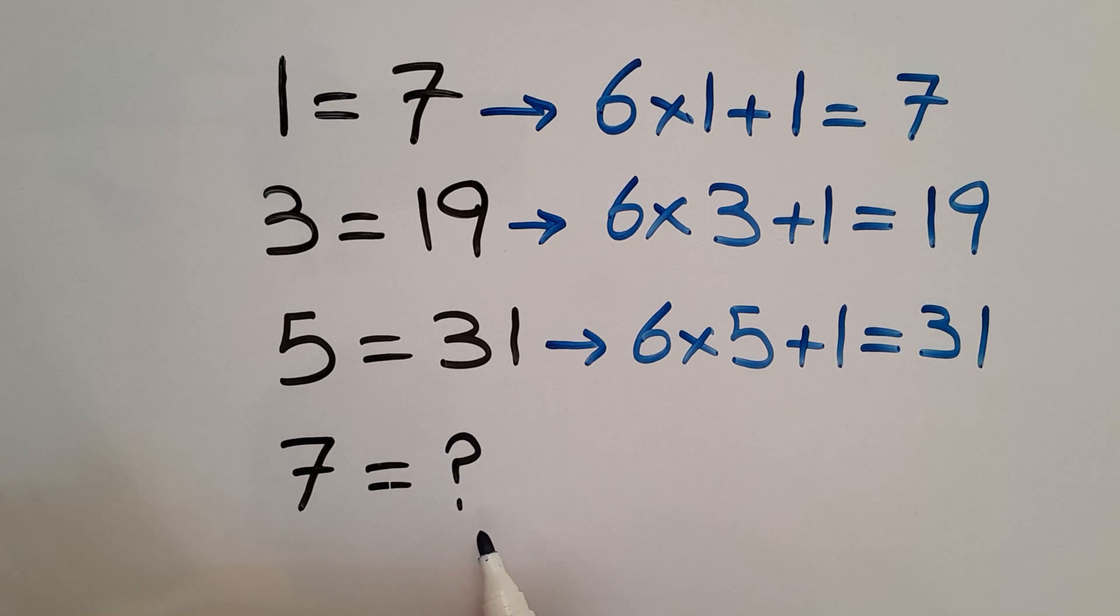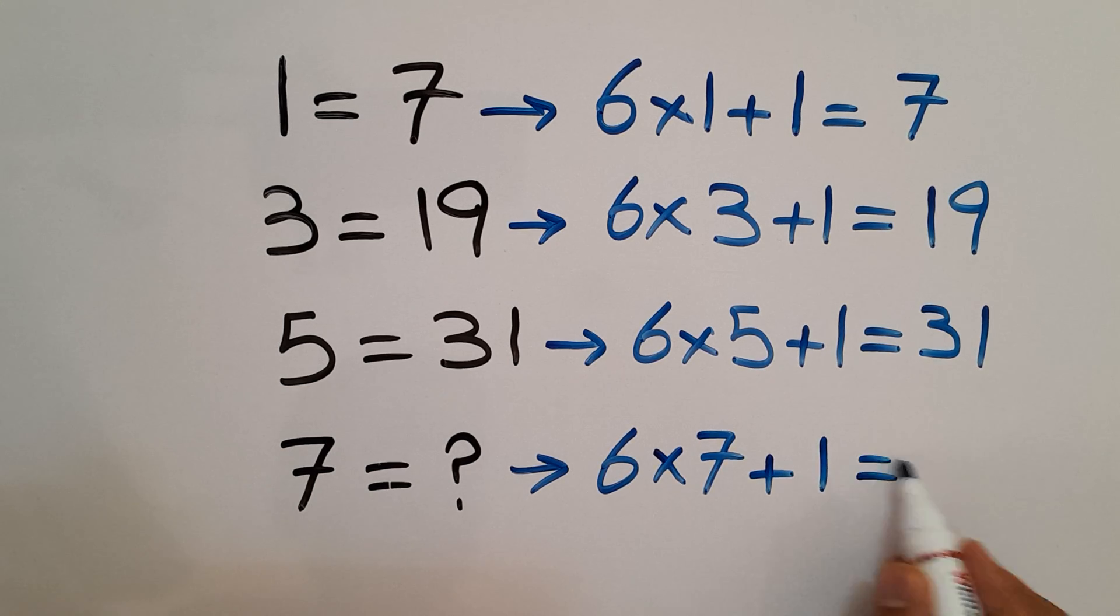In the fourth line we have 7 equals question mark. So therefore, 6 times the left hand side number, which is 7, plus 1 will be equal to question mark. 6 times 7 equals 42.